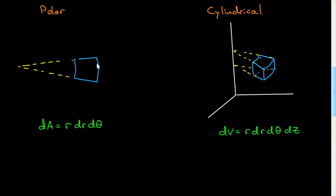In polar coordinates, it's a two-dimensional coordinate system, and we have a little area here shown in blue. We derive the element of area as r dr dθ. This direction here corresponds to the radial direction, and this is dr — some small change dr.